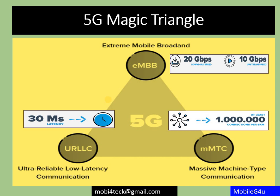The third part is URLLC — Ultra Reliable Low Latency Communication. Latency means how fast data can be delivered, and the target here is around 1 millisecond. These three — eMBB, MMTC, and URLLC — are the main components of the 5G magic triangle, which 3GPP and many standard bodies are actively working on.